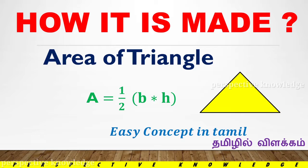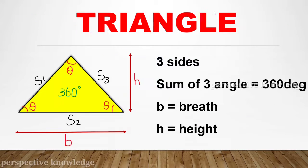If you subscribe to our channel and click on the bell button, we will talk about the triangle area formula and rectangle area formula, and how to derive the formula. A basic triangle has 3 sides, and the sum of angles of a triangle is equal to 360 degrees.